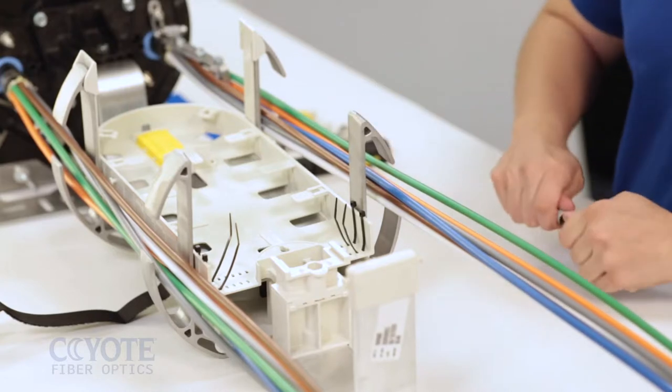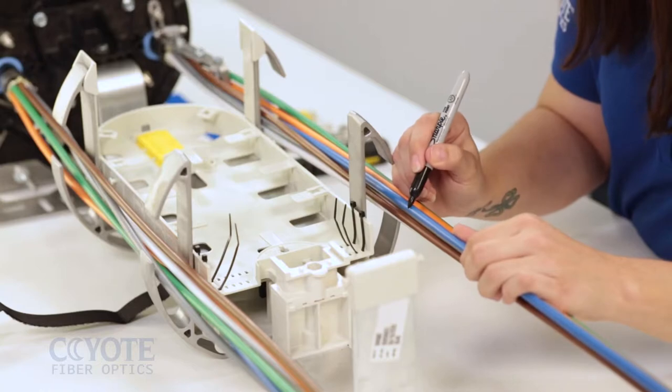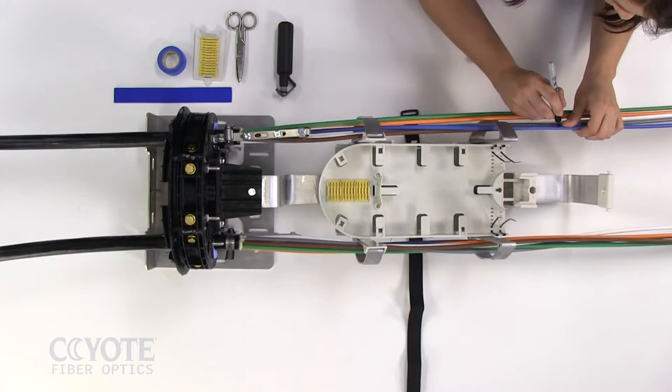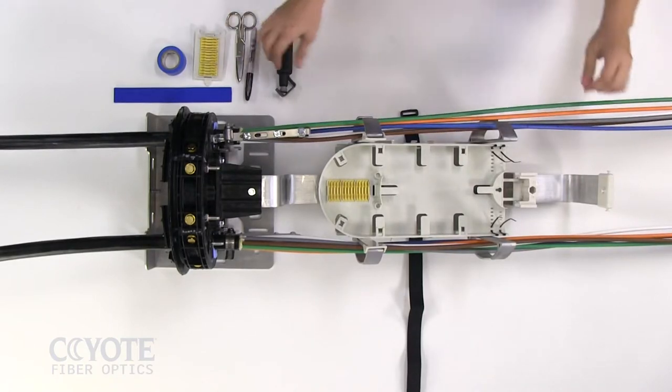Cables with non-pliable subunits must be broken out before routing to the tray. Mark the tube to be opened 17 inches from the sheath opening. Make an additional mark 2 inches from this mark. This will be used to secure the subunit to the splice tray.